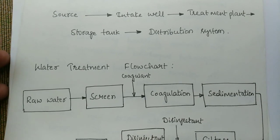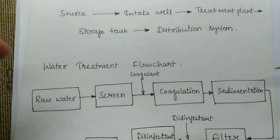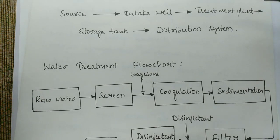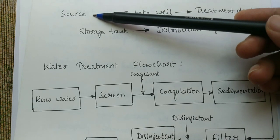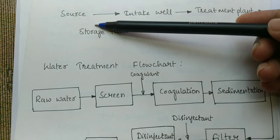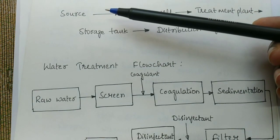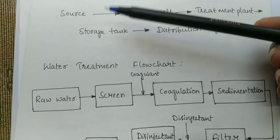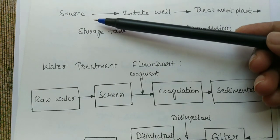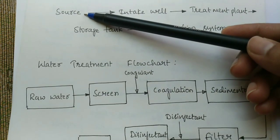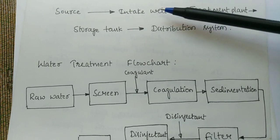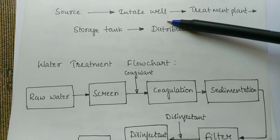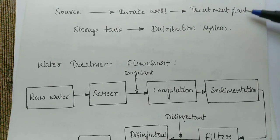Next we will discuss the flowchart of the water treatment plant. Before going to the treatment plant, let us see how water is brought from the source to the people. First is the selection of the source — we already discussed the quality and quantity conditions for each source. From the source, water is taken through an intake well, and then from the intake well the water is taken to the treatment plant, and from the treatment plant water is taken to the storage tank.